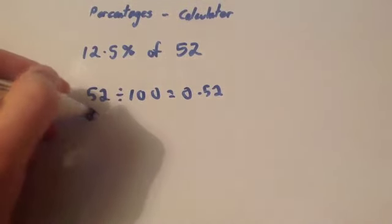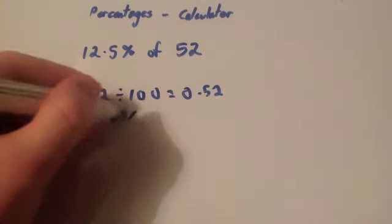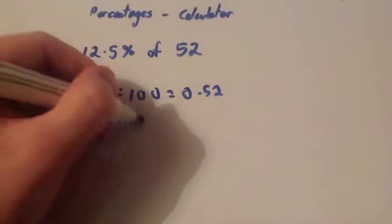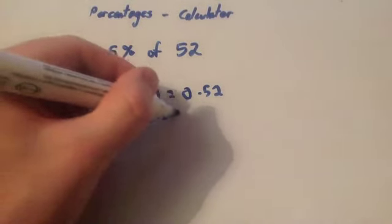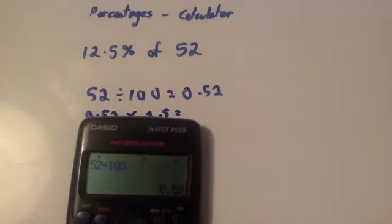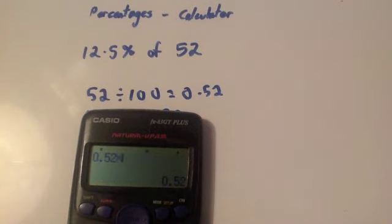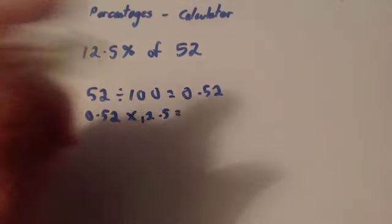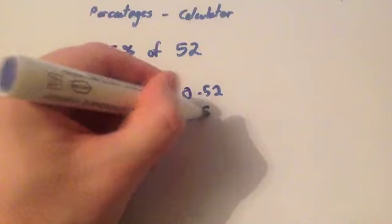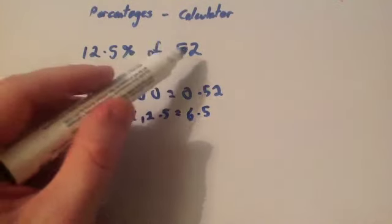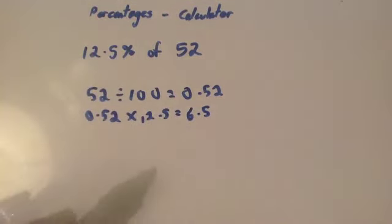Then you take your 1%, your 0.52, and times by the percent you want. So you times by 12.5. You do 0.52 times by 12.5, and that gives you an answer of 6.5. So 12.5% of 52 is 6.5.